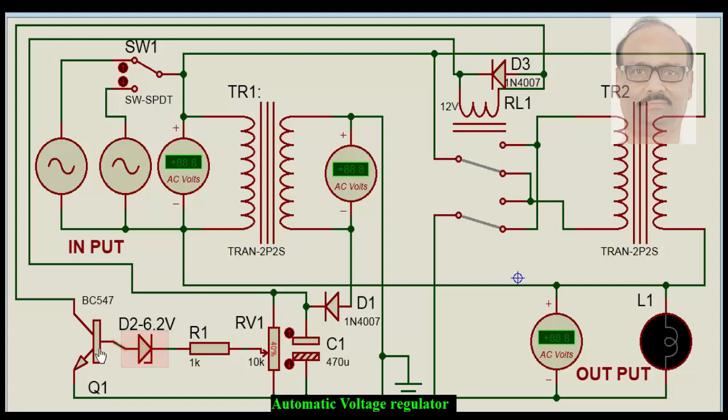When it crosses 6.2 volts, this transistor conducts. In the process, this relay operates. Once this relay operates, the action takes place.